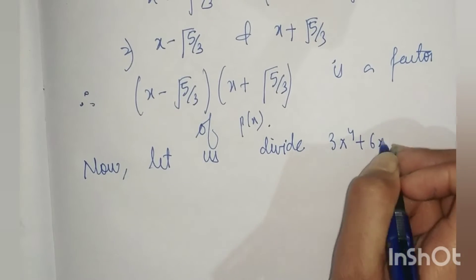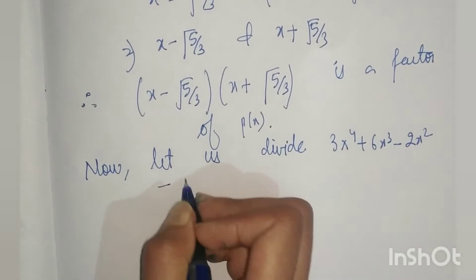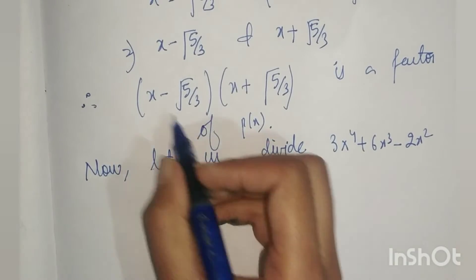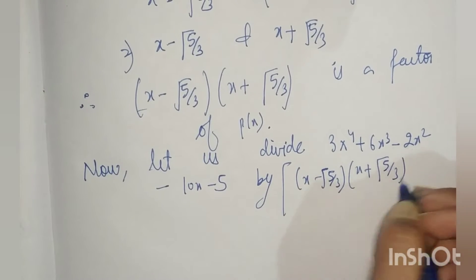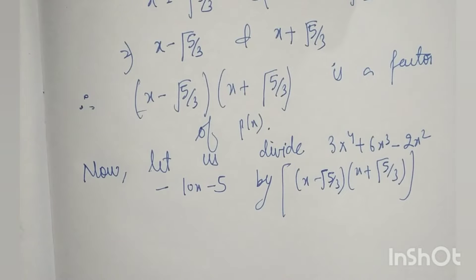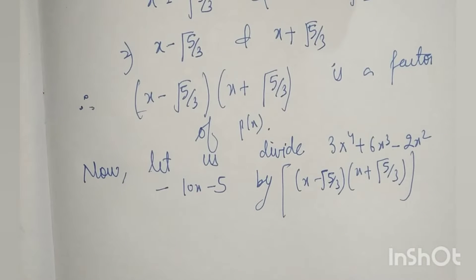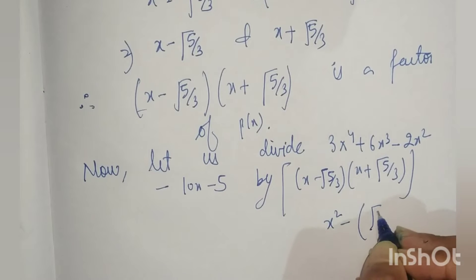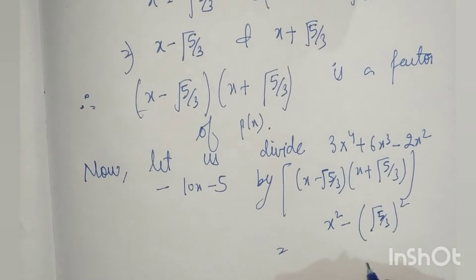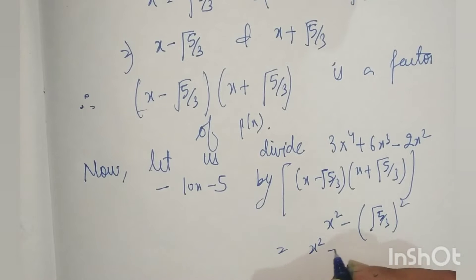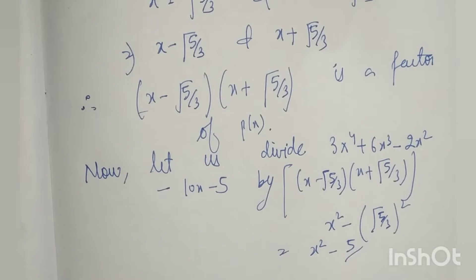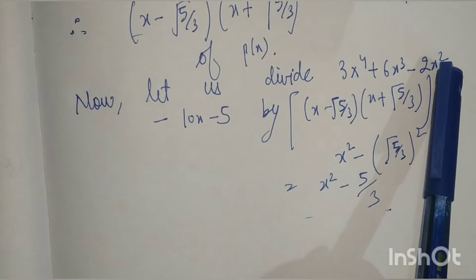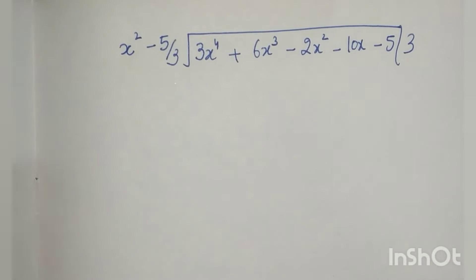We multiply (x - √(5/3)) by (x + √(5/3)). We can write this as (a - b)(a + b) which equals a² - b². So we get x² minus (√(5/3))², which equals x² - 5/3. Now we will divide the polynomial by this.